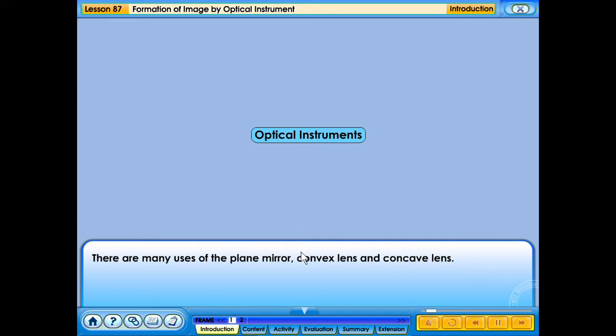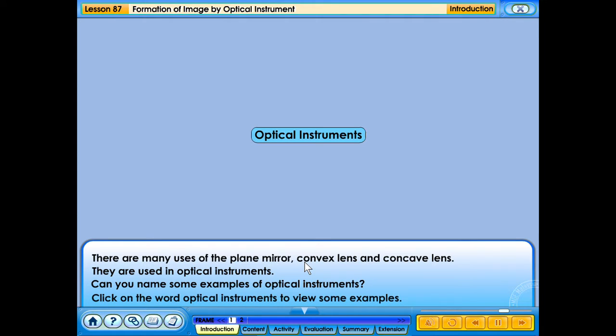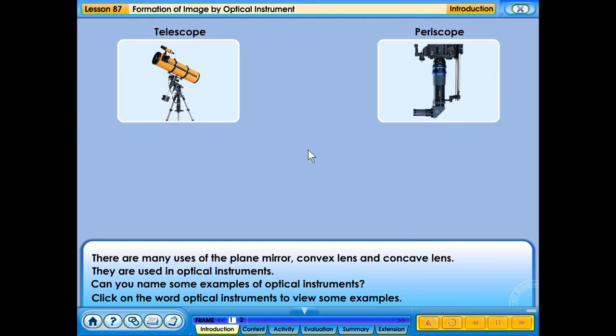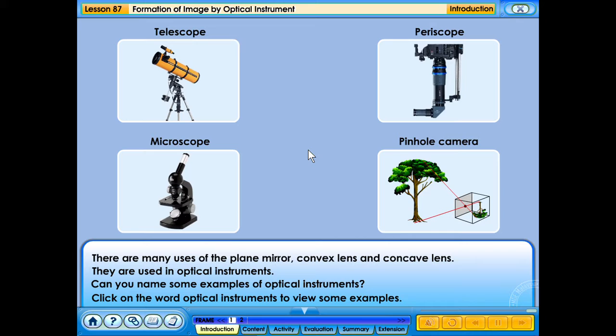There are many uses of the plane mirror, convex lens and concave lens. They are used in optical instruments. Can you name some examples of optical instruments? Click on the word optical instruments to view some examples. Telescope, periscope, microscope and the pinhole camera.